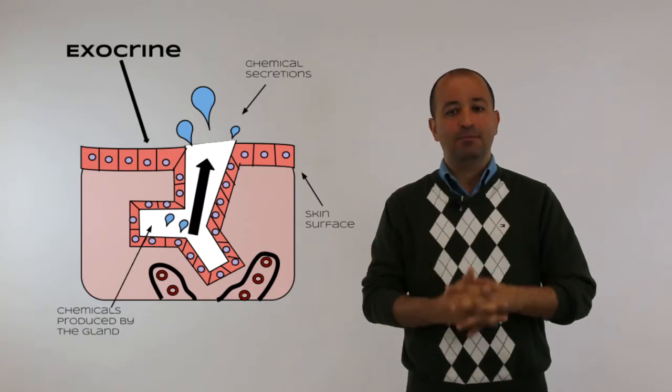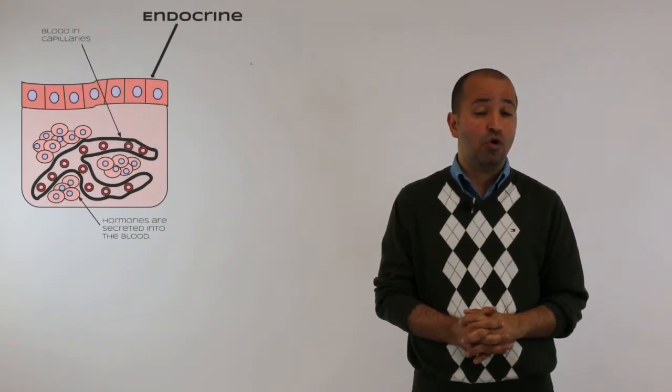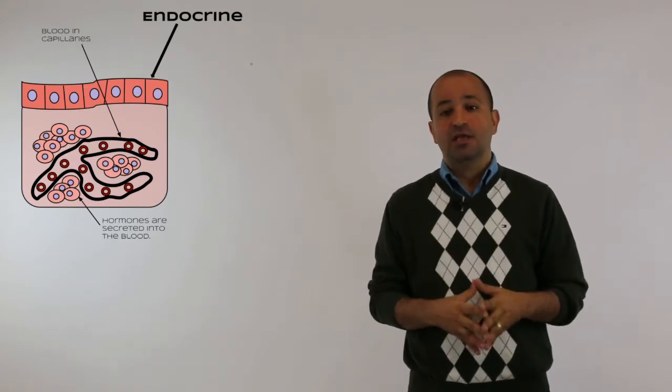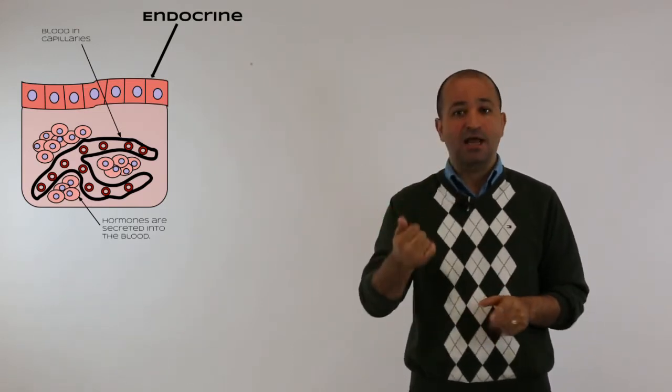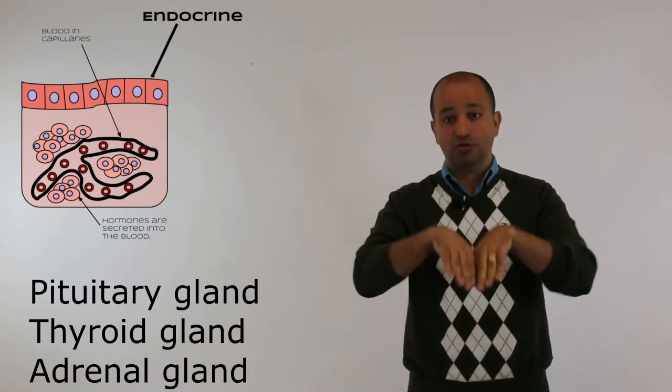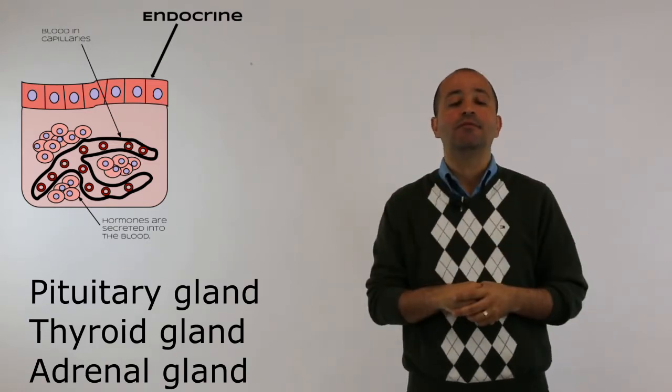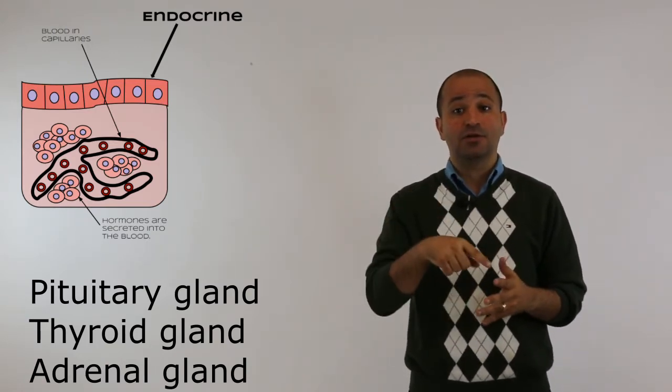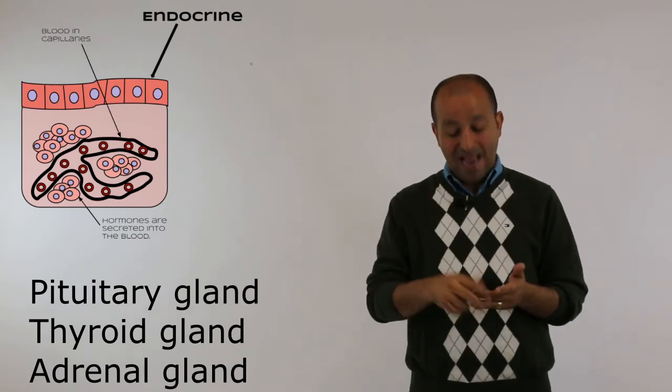So what are examples of them? Endocrine glands produce hormones that enter the blood, such as the pituitary gland, thyroid gland, and adrenal glands. But what are examples of exocrine glands?